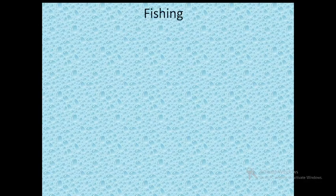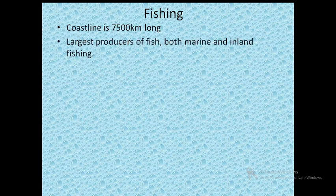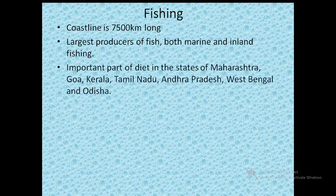The next occupation is fishing. India has a coastline of 7,500 km and fishing plays an important role in the economy of India. India is considered to be one of the largest producers of fish — both marine and inland fishing are developed in India. Fishing provides foodstuff, generates employment, raises the nutritional level, and helps in earning foreign exchange.